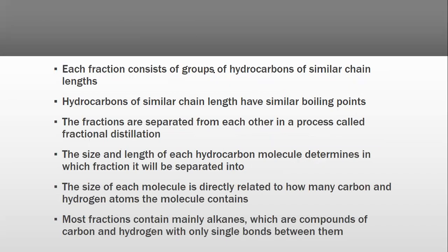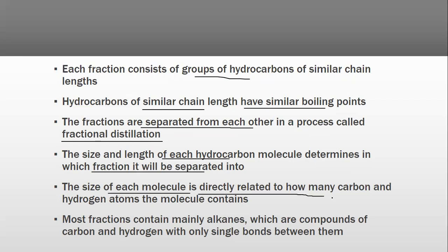Each fraction consists of a group of hydrocarbons of similar lengths. Hydrocarbons of similar chain lengths have similar boiling points, and the fractions are separated from each other in a process called fractional distillation. The size and length of each hydrocarbon molecule determines in which fraction it will be separated. The size of each molecule is directly related to how many carbon and hydrogen atoms it has. Most fractions contain many alkanes, which are compounds of carbon and hydrogen only.